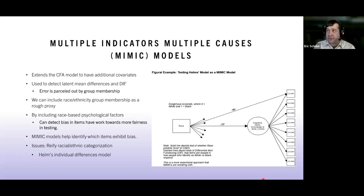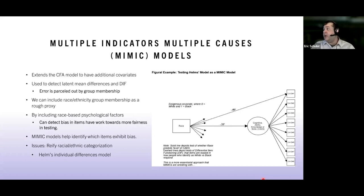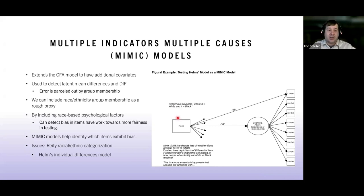This is actually good for smaller sample sizes — around 175 to 100 per group. It's used to detect latent mean differences — looking at construct differences between groups using a zero-one dummy-coded exogenous covariate. For example, zero is White and one is Black as our dummy coded variable. We start with our measurement model and ensure good fit across the whole sample before adding that grouping variable.